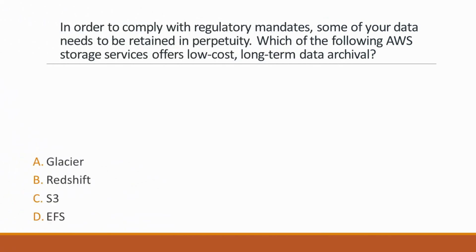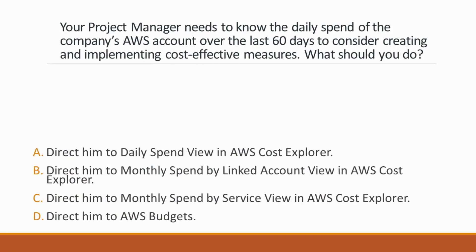Next question: In order to comply with regulatory mandates, some of your data needs to be retained in perpetuity. Which of the following AWS storage services offers low-cost, long-term data archival? Correct answer is option A, because Glacier is your best choice for deeply discounted, long-term object archival, as long as the data does not need to be available online at a moment's notice.